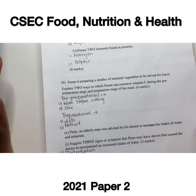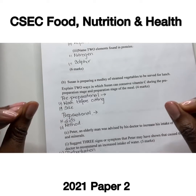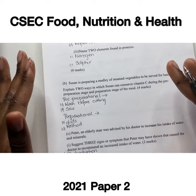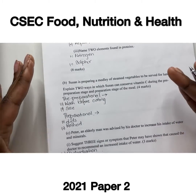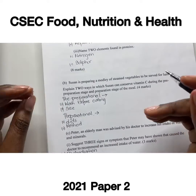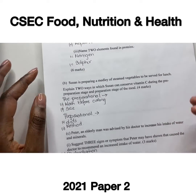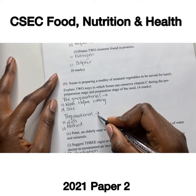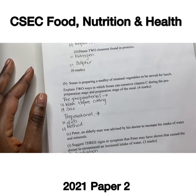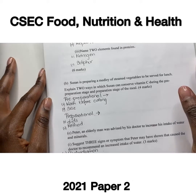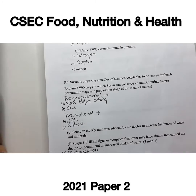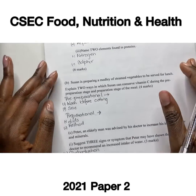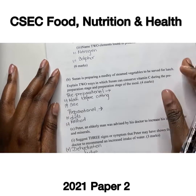You can also consider timing — the less time taken to cook the steamed vegetables, the better you will be at retaining vitamin C. There are several other ways to conserve vitamin C during pre-preparation and preparation stages; these are just how I would approach answering for four marks.